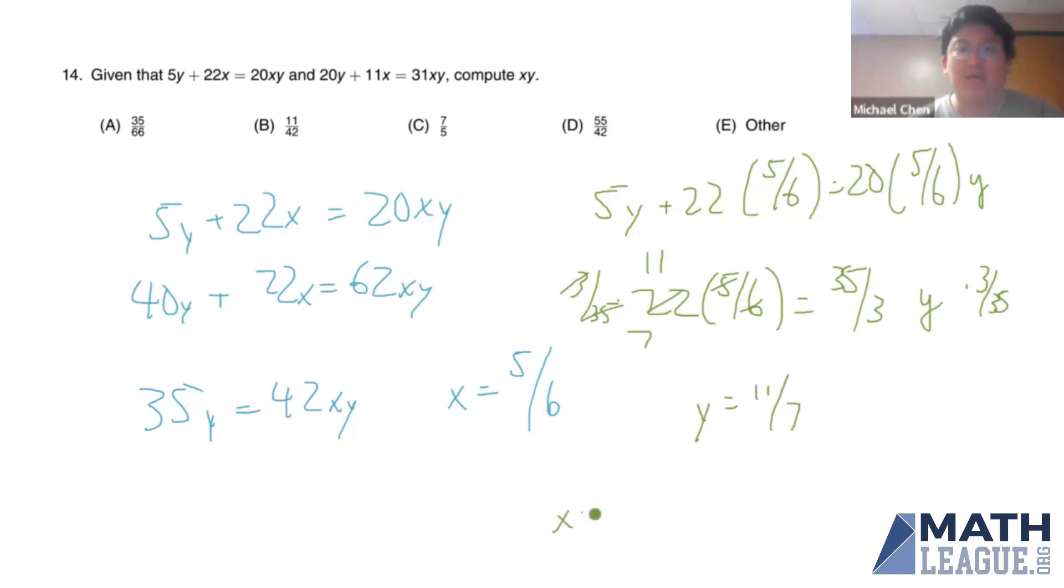I believe that means that xy when multiplied together is 55 over 42, which is answer choice D.